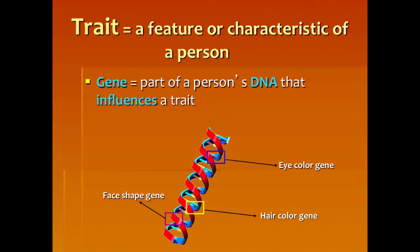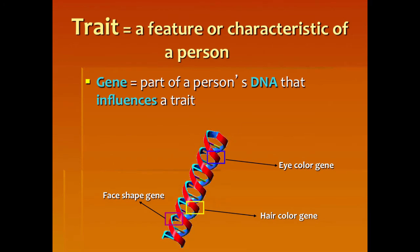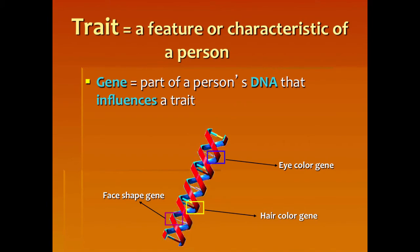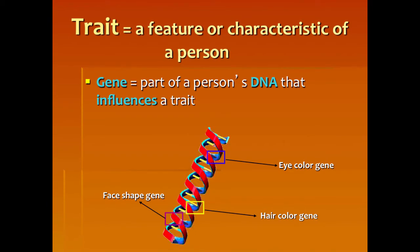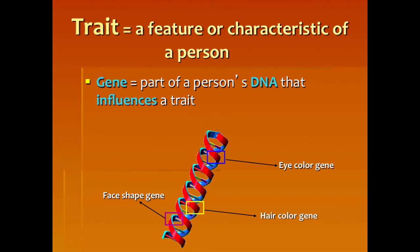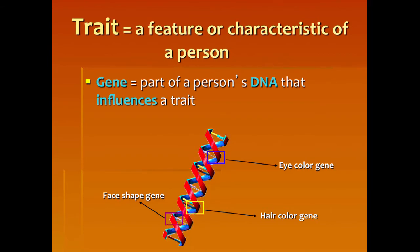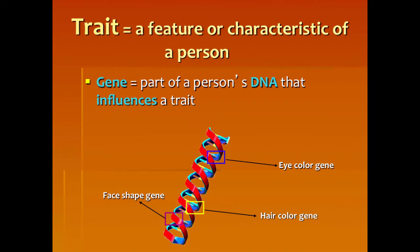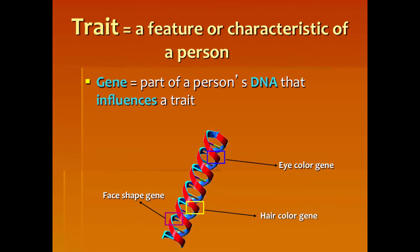Let's go into the definition of a gene. A gene is part of a person's DNA that influences a trait. I have a gene for green eyes because I actually have the phenotype of green eyes. However, I also have a gene for blue eyes. Even though I myself do not have blue eyes, I know I carry the blue eye gene because my daughter has blue eyes. To have blue eyes, you have to have two blue eye genes, and we'll get into how we can figure that out later.